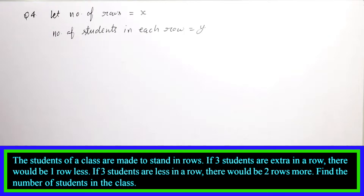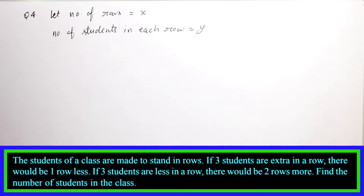बच्चों कहा गया है कि एक class के विद्यार्थियों को, मतलब students को row में खड़ा किया जाता है। यदि एक row में 3 extra students लगाएं, जितने लगते हैं उसके अलावा, तो एक row कम हो जाएगी। दूसरे case में कहा जाता है कि यदि एक row में से 3 students less कर लिये जाएं, तो उस case में 2 extra row लगती हैं।